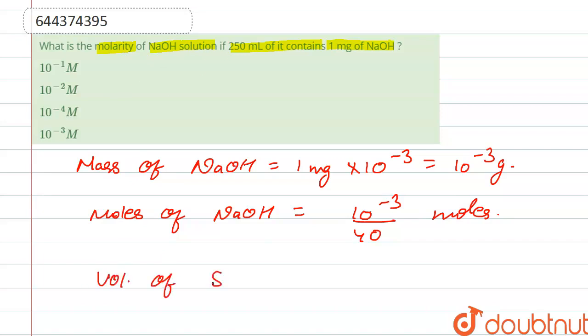Next, it is given that volume of solution is 250 mL. So we convert it to liter: 250 into 10 to the power minus 3 liter.